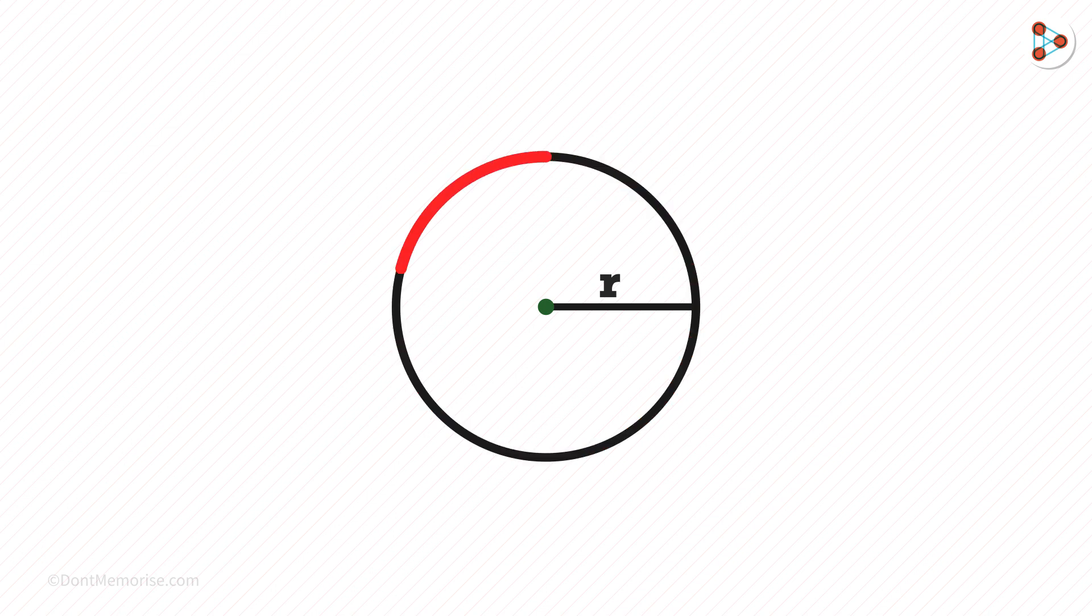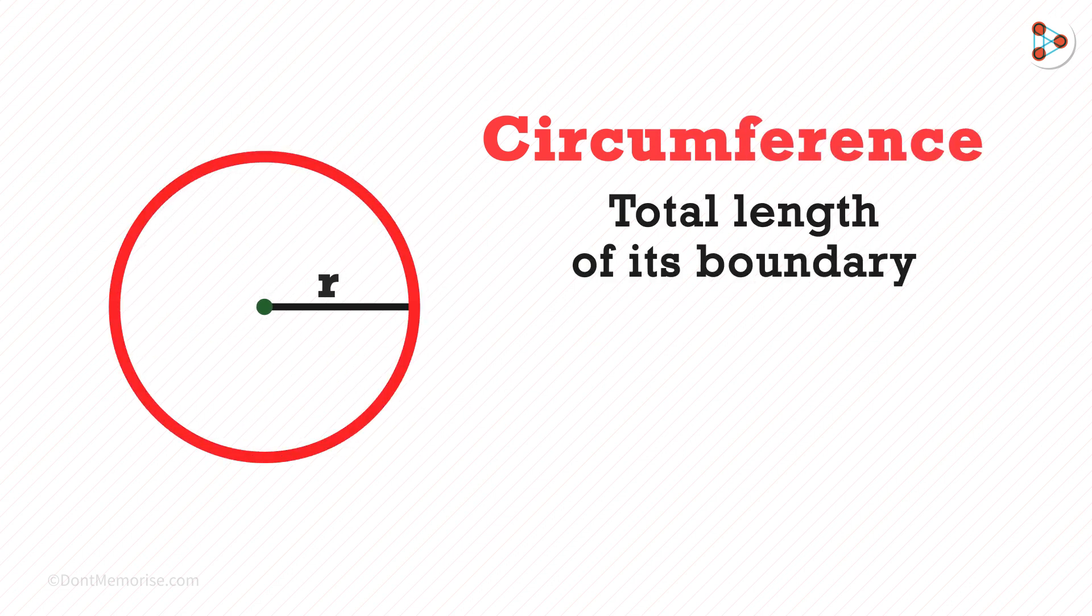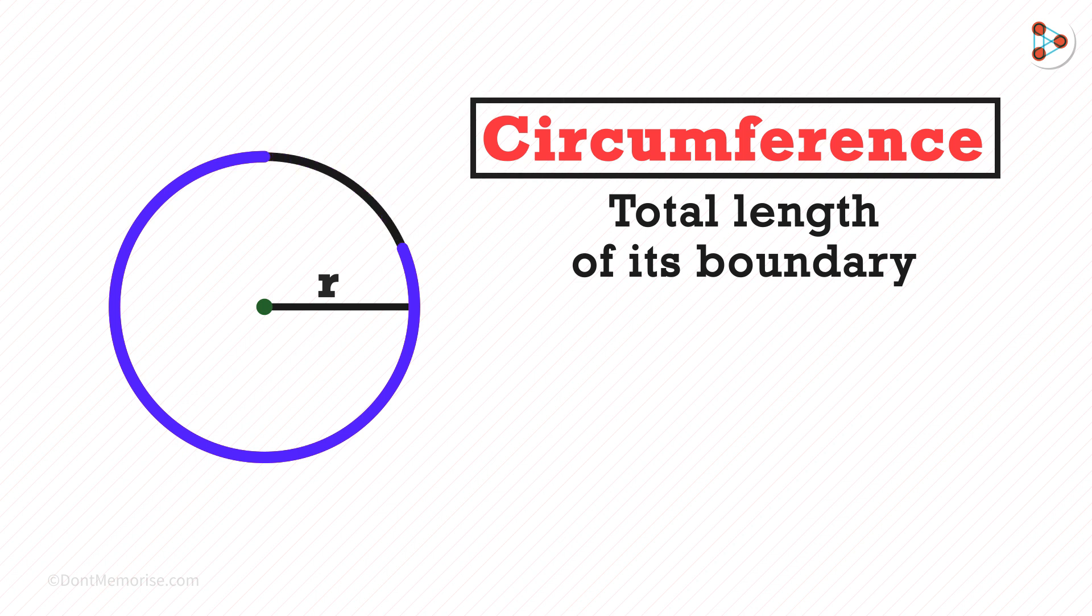A circle is basically a shape having all its points equidistant from its center. The circumference is basically the total length of its boundary. So this boundary length is called the circumference.